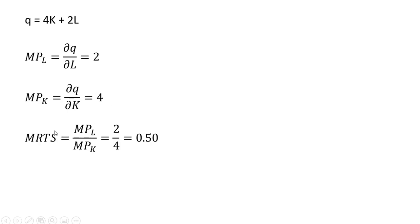The marginal rate of technical substitution is the ratio of the marginal products of labor. So the marginal product of labor divided by the marginal product of capital gives us the MRTS: 2 divided by 4. We have an MRTS in this example of 1/2.